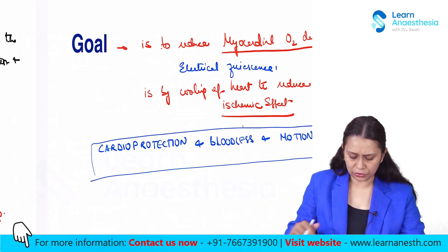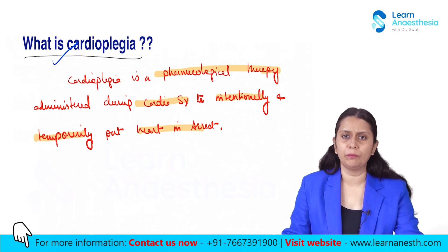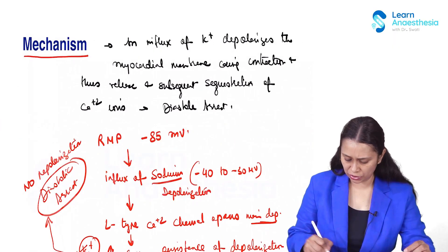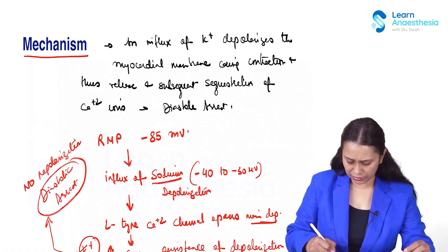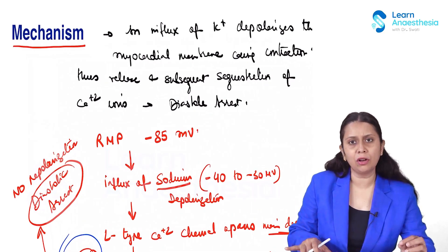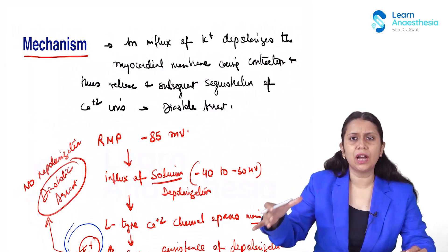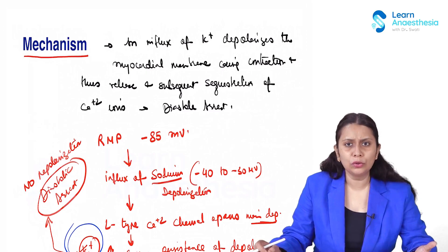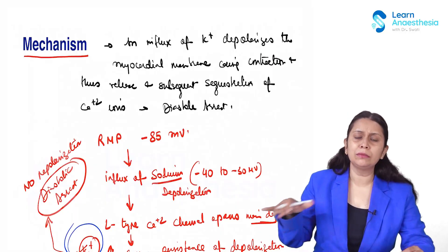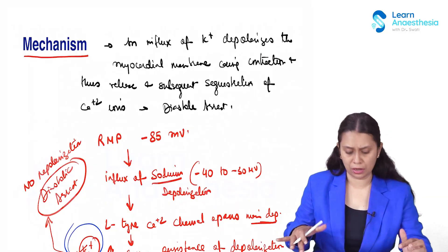Most cardioplegic solutions contain potassium, but it is not only potassium. Apart from potassium, the cardioplegic solution also contains other ions like magnesium and calcium, all put in such a composition that the contractility of the heart is reduced. Apart from this, sometimes glucose is added to provide nutrition to the myocardial cells. So there are different compositions of cardioplegic solution to put the heart in diastolic arrest and also to nourish the heart.